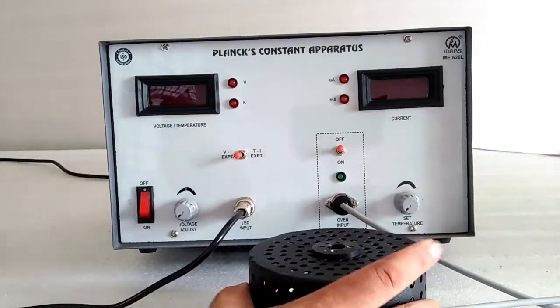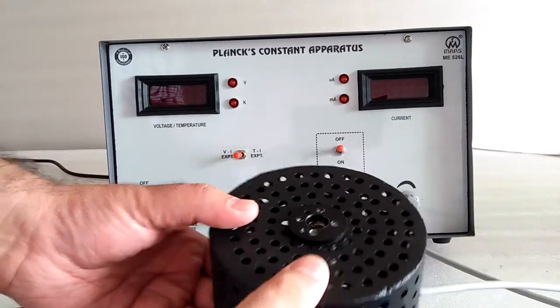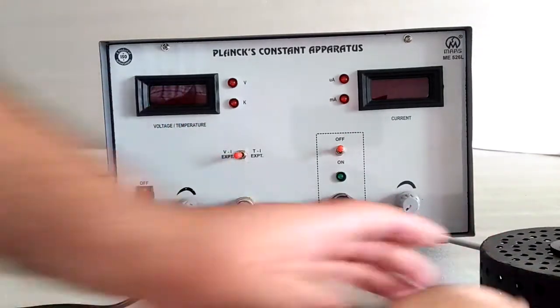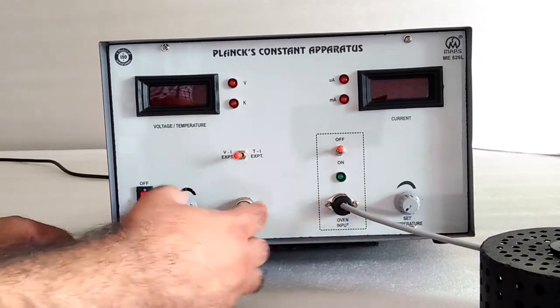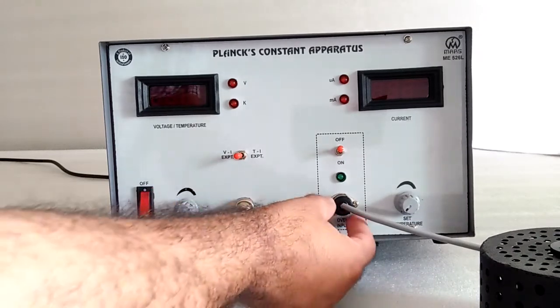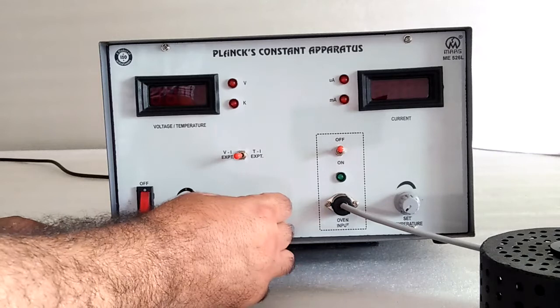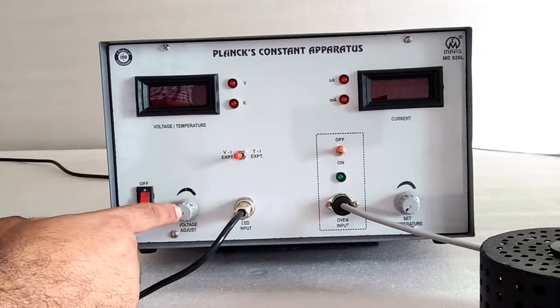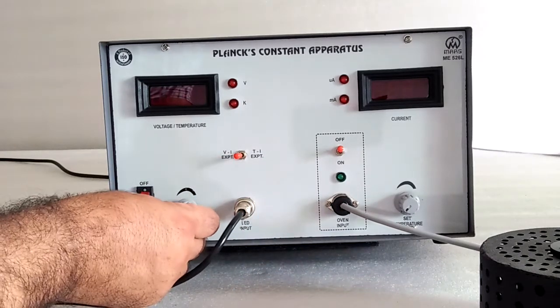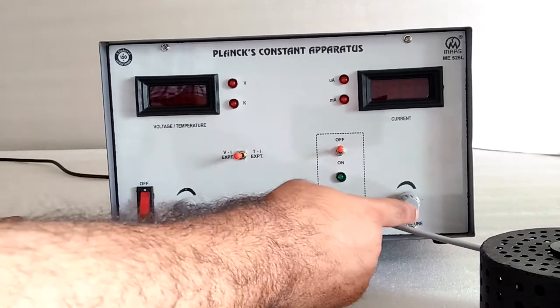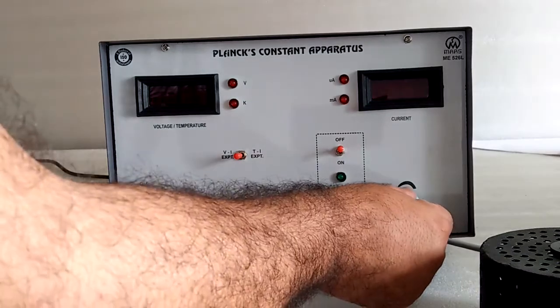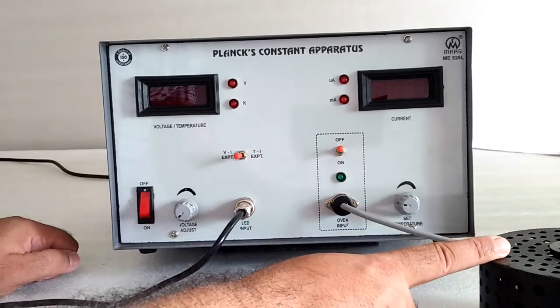And here is the oven to heat the LED. This is the different gap to fix the heat for the oven and here is for the LED. Here is to increase the voltage across the LED and here is the temperature knob to increase the temperature in the oven.